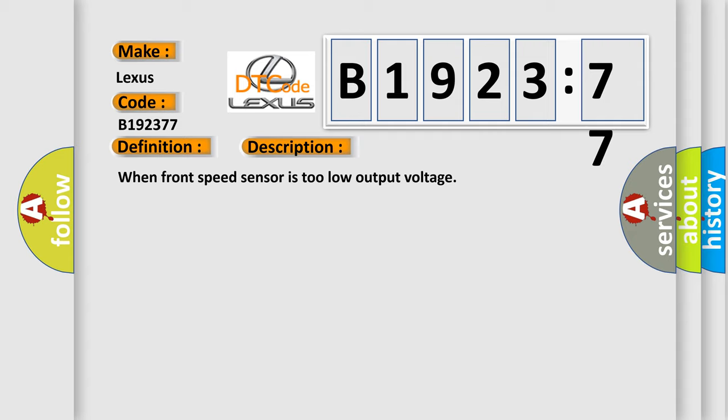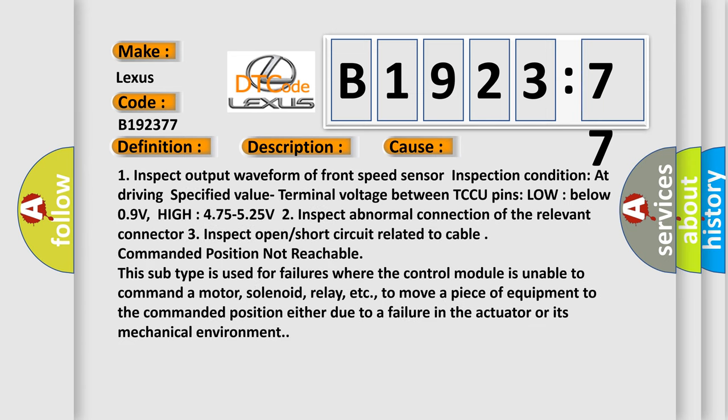And now this is a short description of this DTC code. When front speed sensor is too low output voltage.